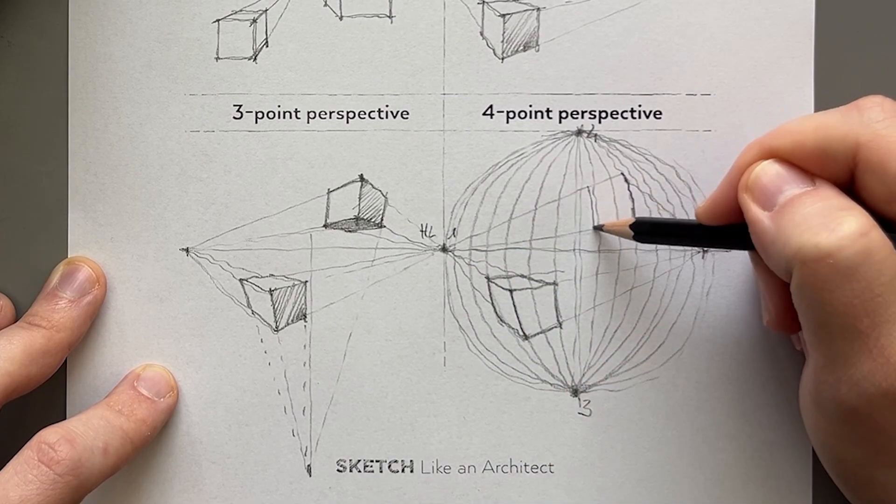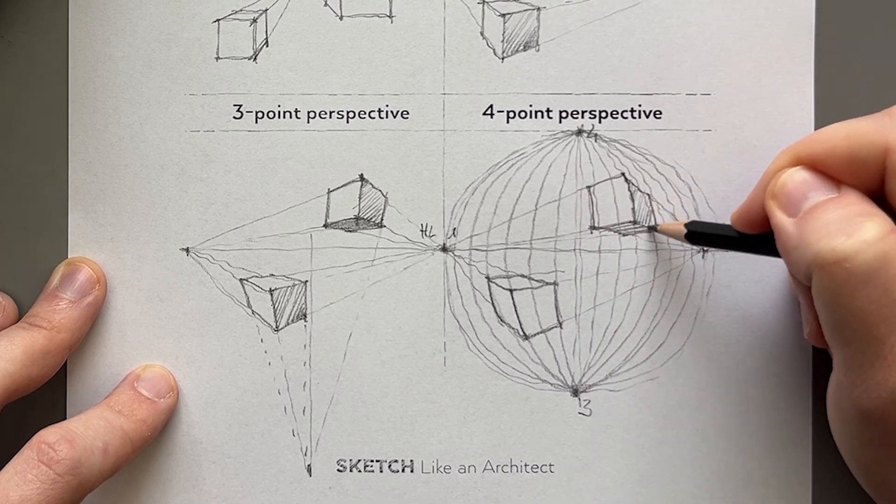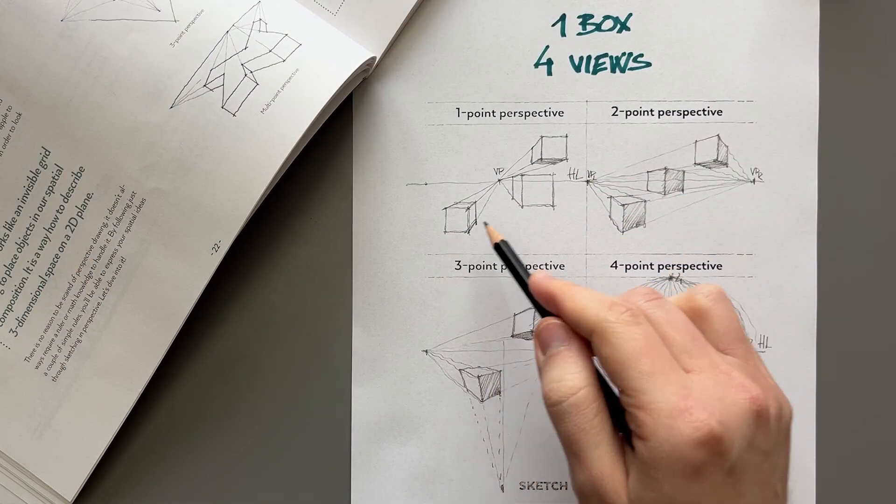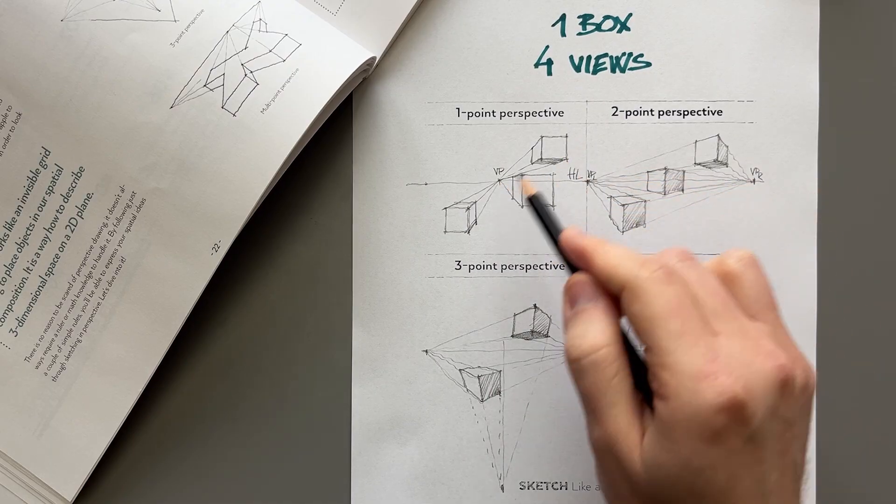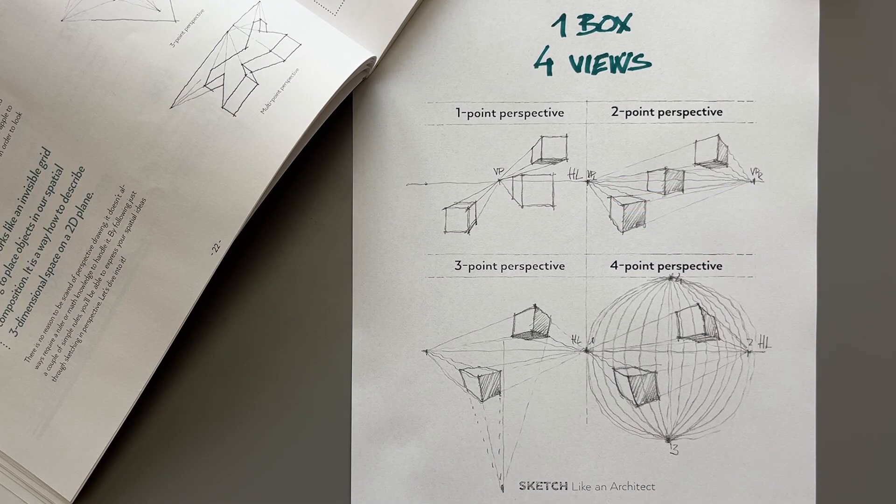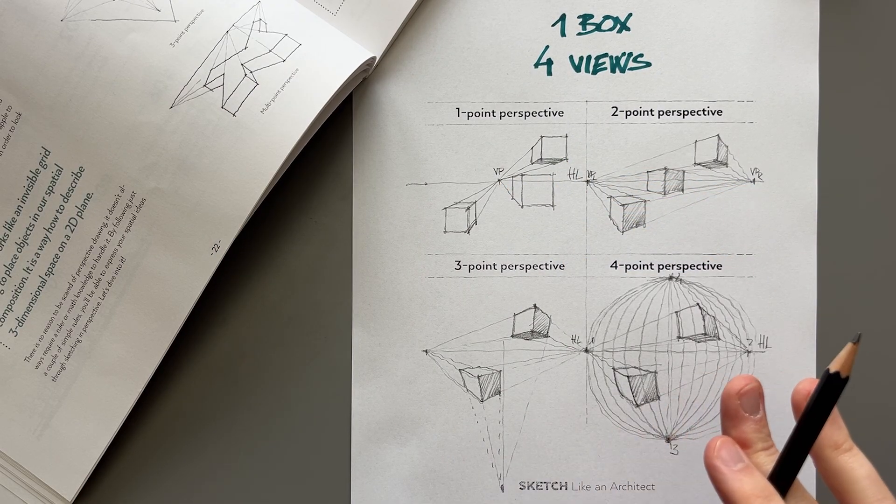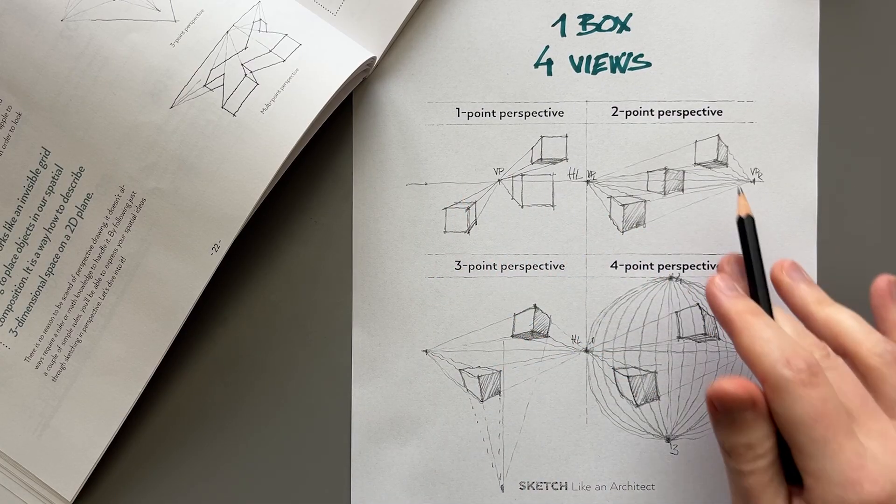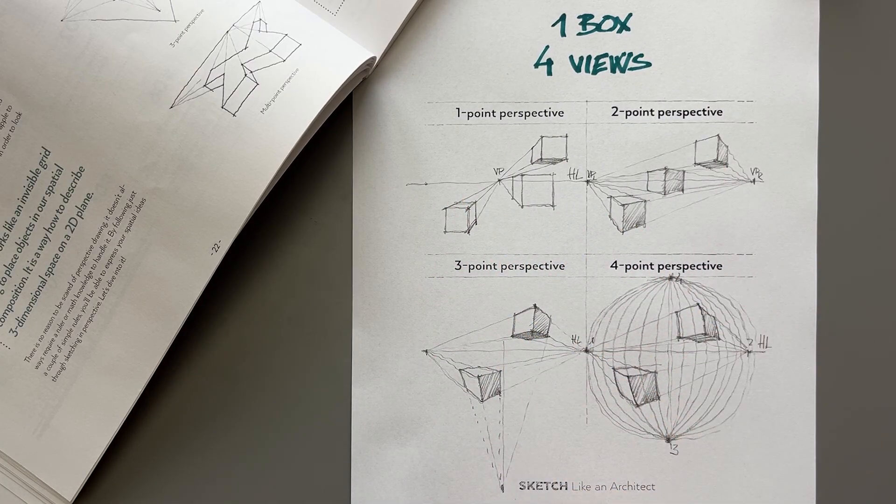So there you have it—same box in four different perspective views, showing examples how it can look below the horizon line, above, or when it's crossing the horizon line. Hopefully this sheds more light on different perspective views, different numbers of primary vanishing points, and when to use each type to really achieve the desired result.